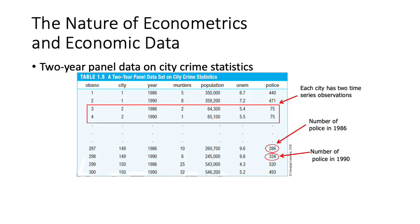In this table, for each city in the second column — from city number one to city number 150 — we have two observations because there are two different years for each city: one in 1986 and the second in 1990. After this, we have the number of murders, followed by population size, then unemployment level, and finally the size of the police force.